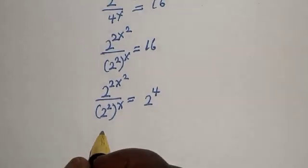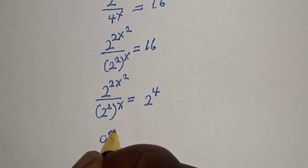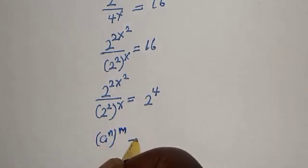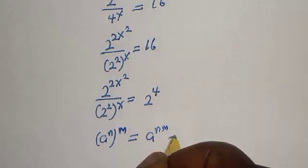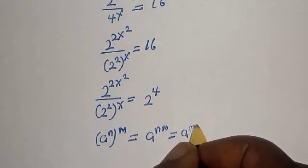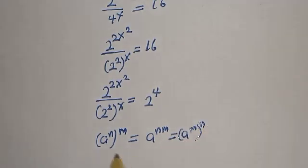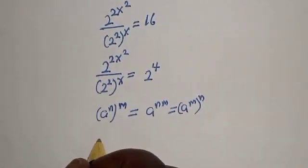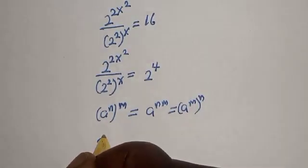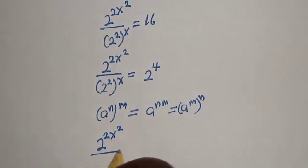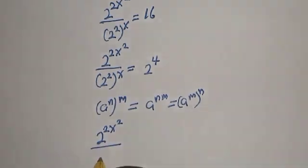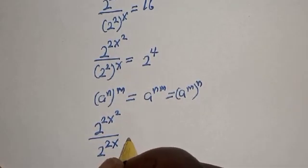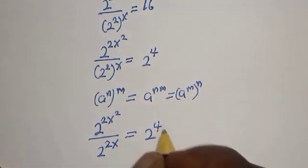Remember this rule: a raised to power n raised to power m is equal to a raised to power n·m, which also equals a raised to power m raised to power n. Applying this, 2 raised to power 2 raised to power s becomes 2 raised to power 2s. So we have 2 raised to power 2s squared, divided by 2 raised to power 2s, is equal to 2 raised to power 4.